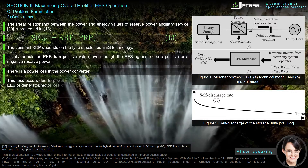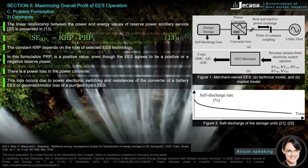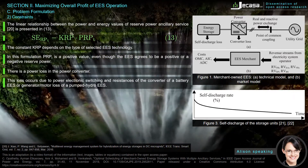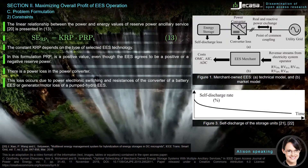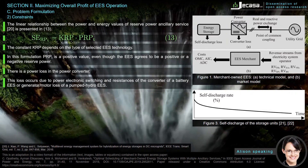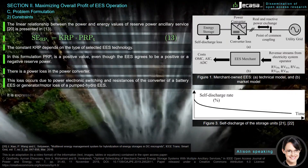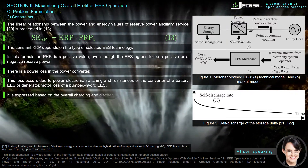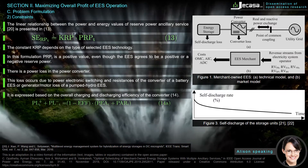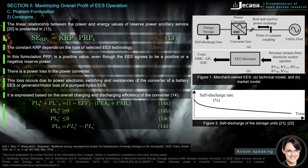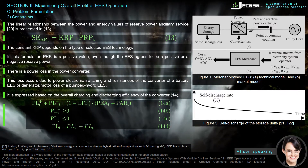There is a power loss in the power converter. This loss occurs due to power electronic switching and resistances of the converter — for a battery EES or generator/motor loss of a pumped hydro EES. It is expressed based on the overall charging and discharging efficiency of the converter, as given in equation 14.